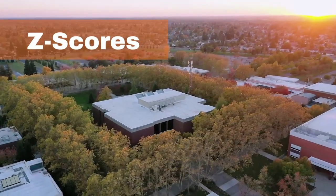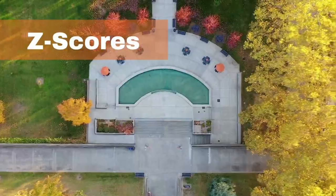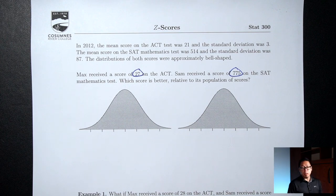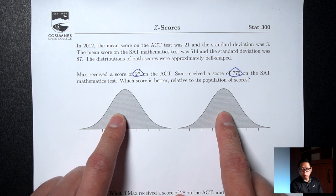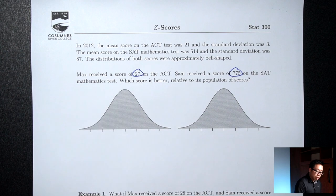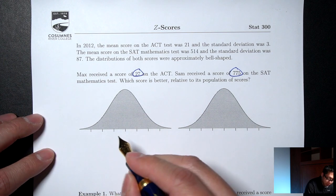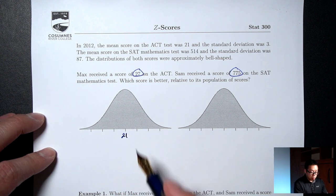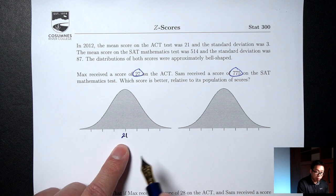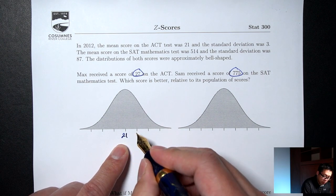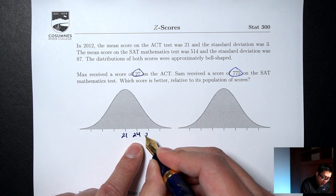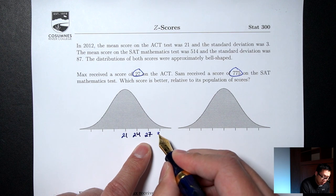How do we compare things that we can't compare directly? We're told the mean and standard deviation of both tests. If you know the mean and standard deviation, we can always make the empirical rule picture. The mean for the ACT was 21 and the standard deviation was 3. Put the mean in the middle, then use the standard deviation to go up three times: 21 plus 3 is 24, plus 3 again is 27, plus 3 one more time is 30.